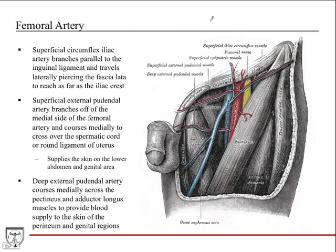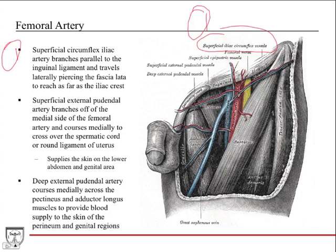The superficial circumflex iliac artery branches parallel to the inguinal ligament and travels out laterally. It pierces the fascia lata to reach as far lateral as the iliac crest.